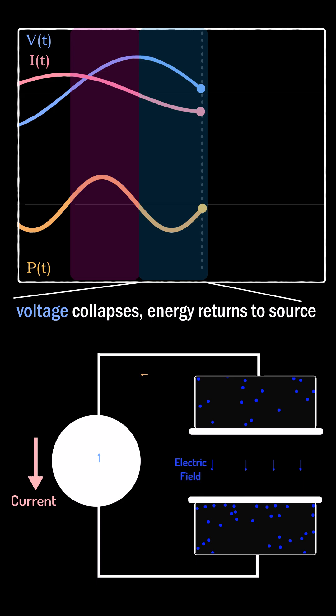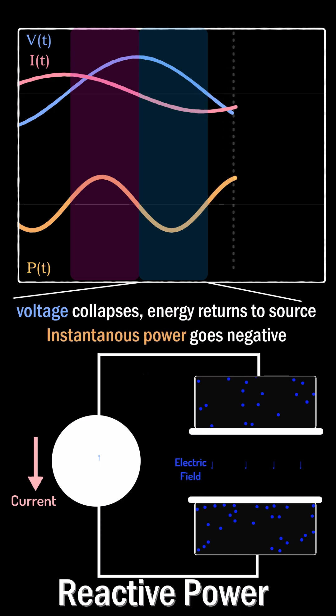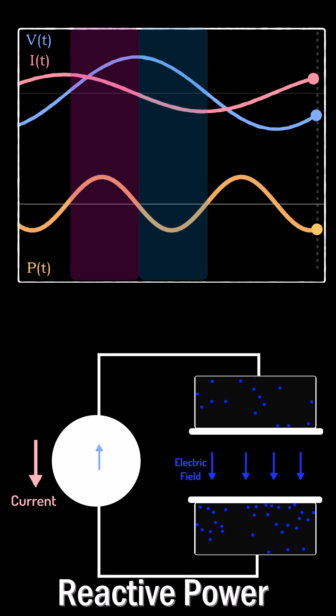When the voltage collapses, energy actually flows from the circuit back to the source. This cycle continues on and on.